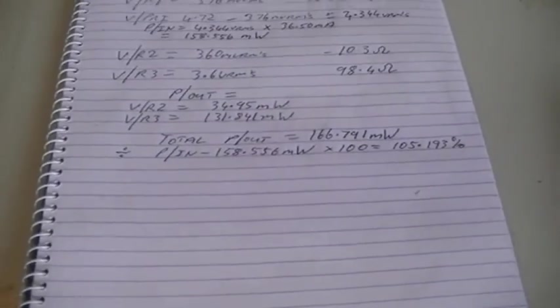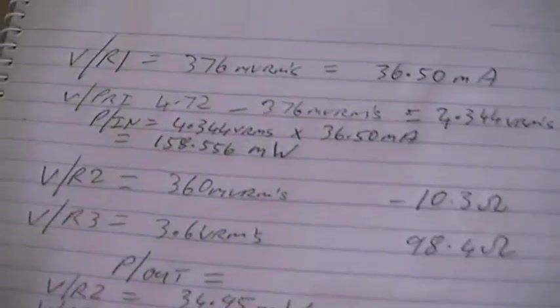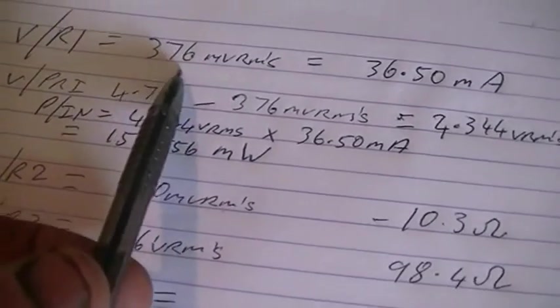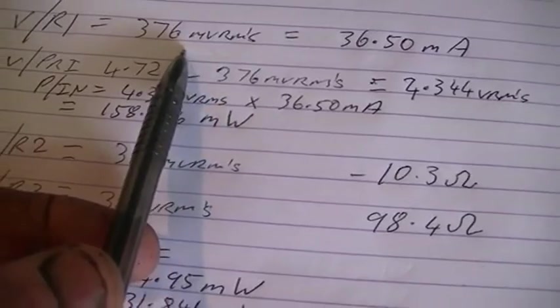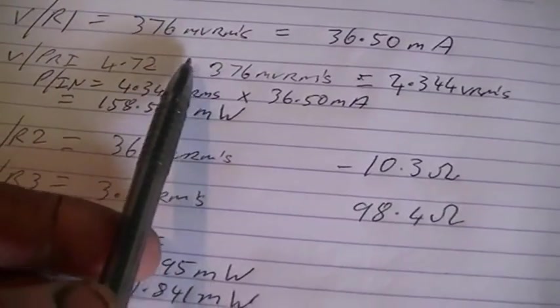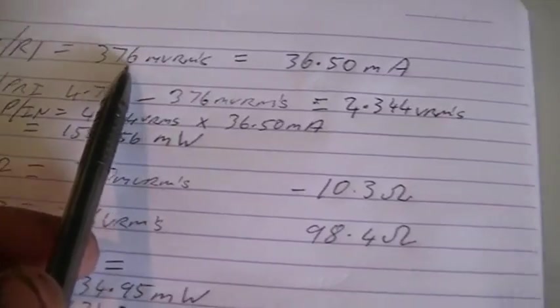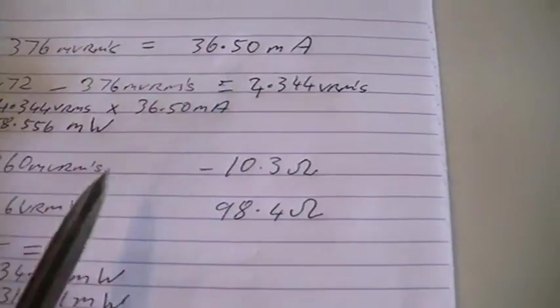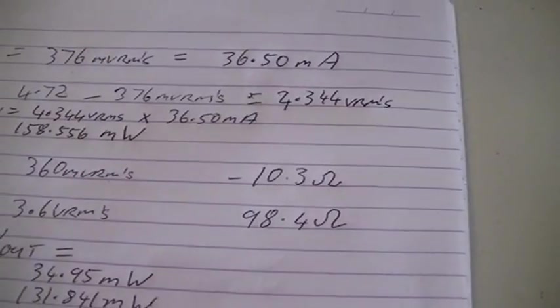So here are the results from the test we just did. Of course, 376 millivolts we had across R1, which is 10.3 ohms. This gives us 36.5 milliamps of current.